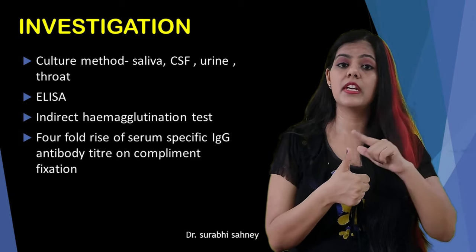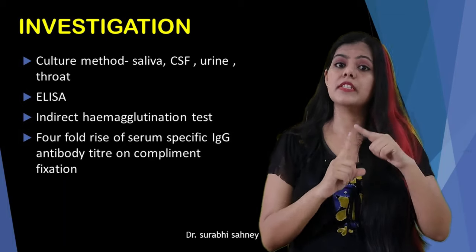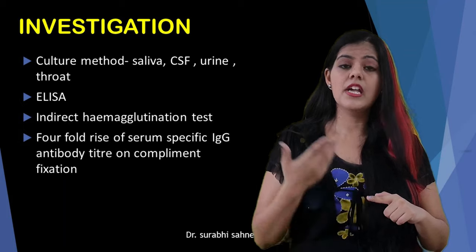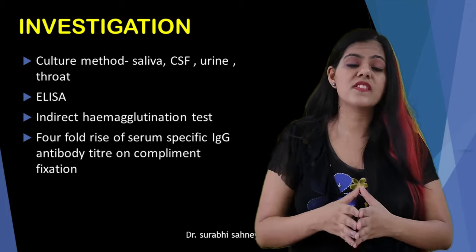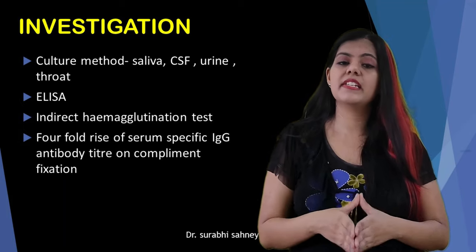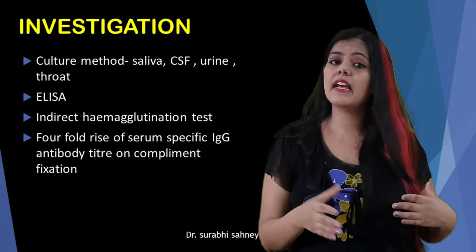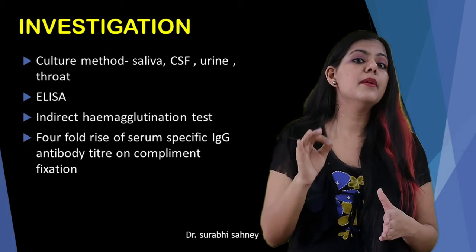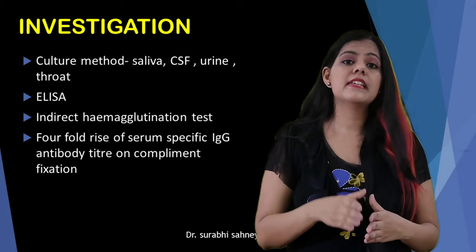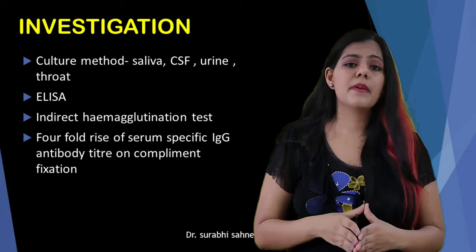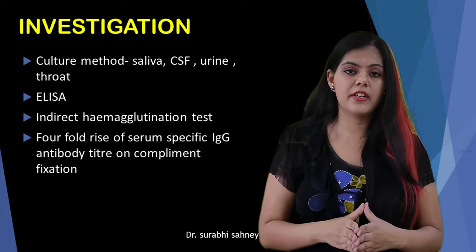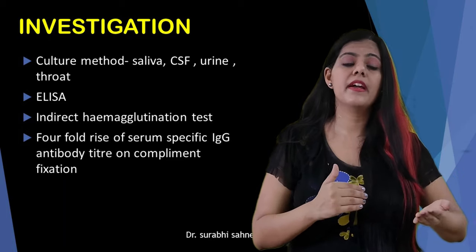The methods of investigation include ELISA. You can take samples from saliva, CSF, urine, or throat and send them to culture media to identify which virus is present, with positive or negative findings. The indirect haemagglutination test is also very useful to diagnose mumps. Finally, specific IgG antibody titre — a fourfold rise in serum antibody — is another method to confirm the diagnosis.